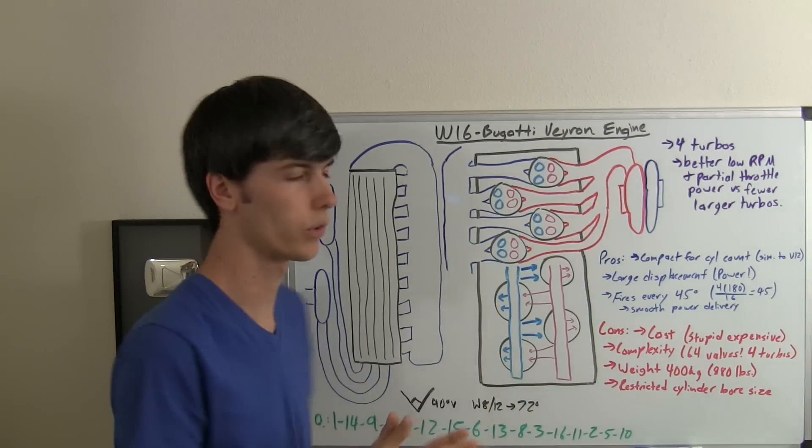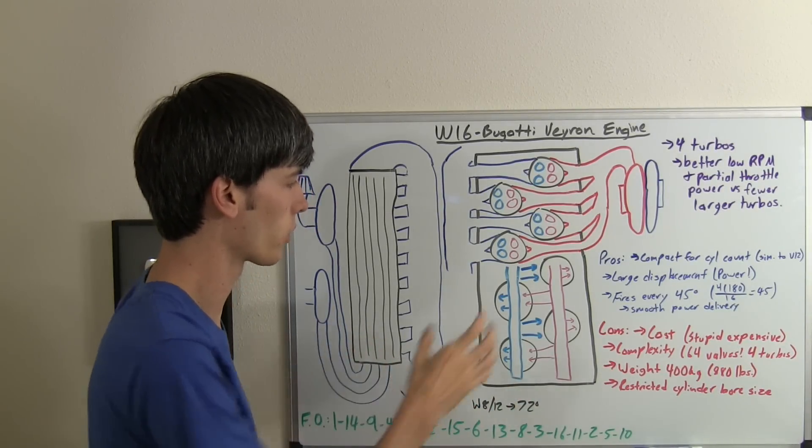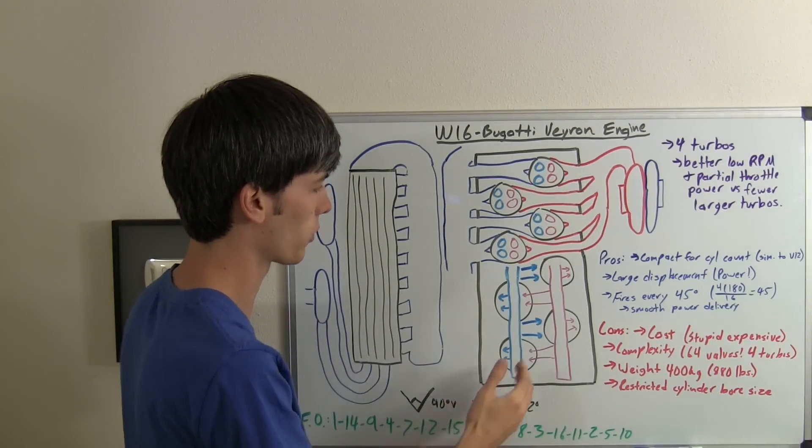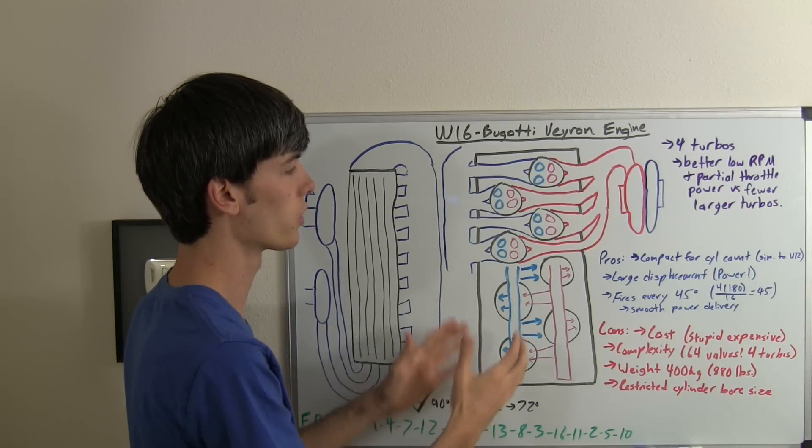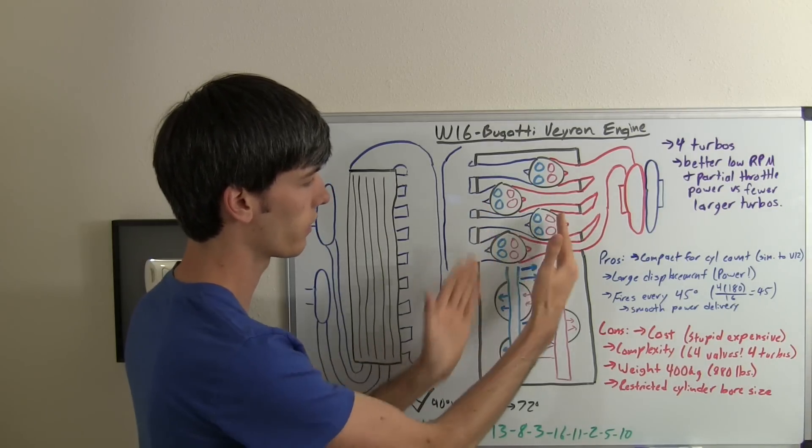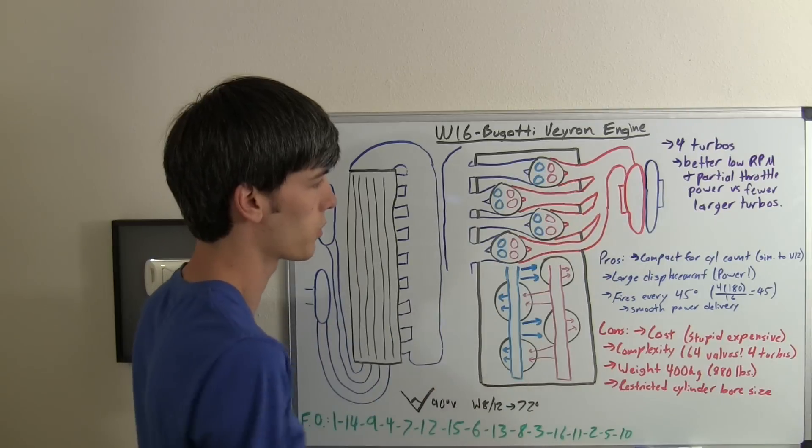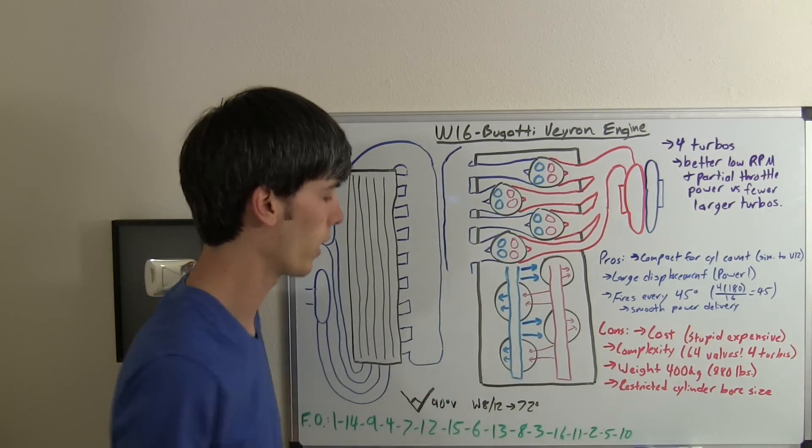The valve train for this looks very similar to a VR6. Basically, on the left side, you're going to have a camshaft controlling the intake valves for both sets of cylinders, the left and the right. On the right, you're going to have a single exhaust camshaft controlling the exhaust valves for both the left and the right.